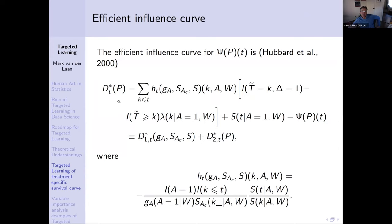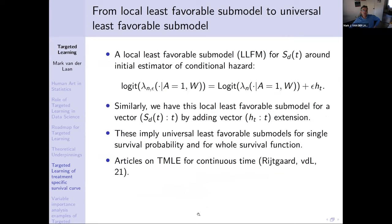The canonical gradient — call it D-star of P — depends on P and on your target quantity, for instance the survival function at time T. The canonical gradient looks like a time-dependent covariate times an indicator of having a failure at observed time K, minus the residual — the conditional probability, which is the hazard. Then there's a function of the covariates with mean zero. So the efficient influence curve has two components: one is a score for the distribution of W, and the other is a score for the conditional hazard of T given A and covariates. The latter has the form of a clever covariate times a residual.